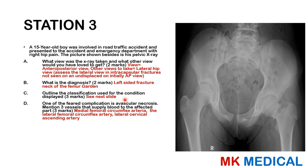Station three: a 15-year-old boy was involved in a road traffic accident and presented to accident and emergency with right hip pain. His X-ray is shown. What view was taken and what other views would you want? This is an anteroposterior view, and the other view I would want is a lateral hip X-ray — very important because sometimes an intracapsular fracture may not be visible on the AP view but may only be seen on the lateral. The diagnosis is a fracture of the neck of the femur. Comment below on what Garden classification this is — class one, two, three, or four.